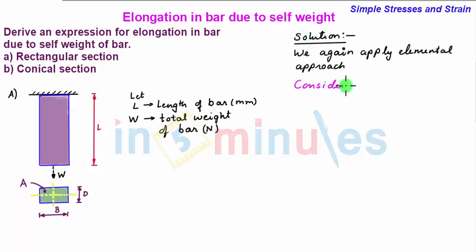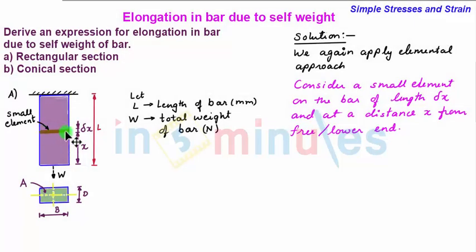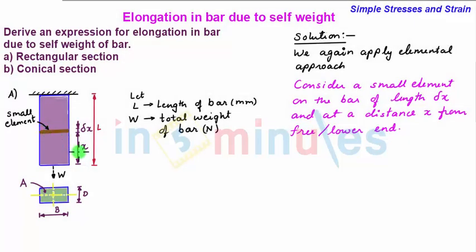Consider a small element on the bar of infinitesimal length delta x and at a distance x from free end or the lower end. So this is a small element considered which is at a distance x from the free or lower end and of length delta x.